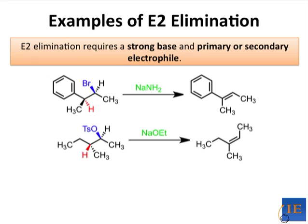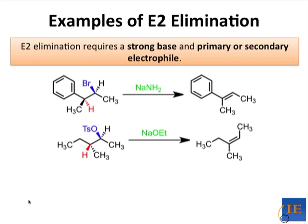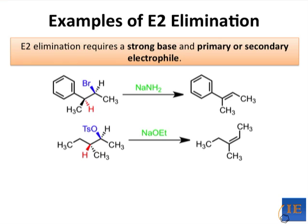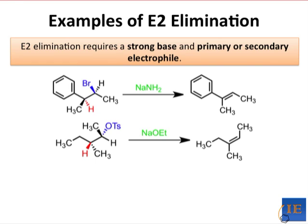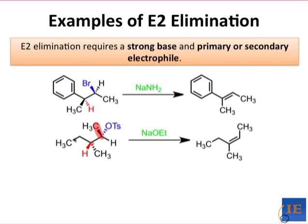The second example is a bit more complicated because the alpha hydrogen and leaving group are not drawn anti-periplanar to each other. In order to see why the Z product must form in this reaction, you'll have to rotate — either mentally or with a model kit — around the central bond to get the alpha hydrogen and tosylate groups parallel and pointing in opposite directions. Pause the video and see if you can mentally perform that rotation. In the resulting conformation, the H and OTs groups are anti-periplanar and the two methyl groups are pointing in opposite directions. This methyl group and the ethyl group will end up cis.